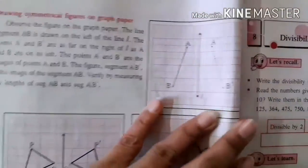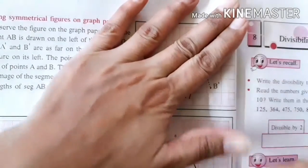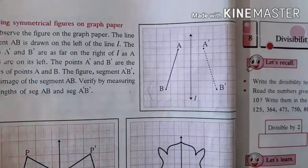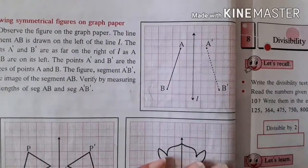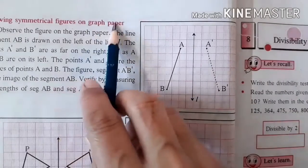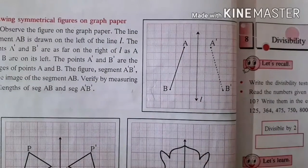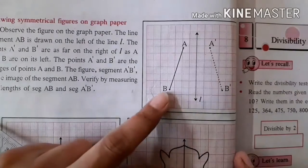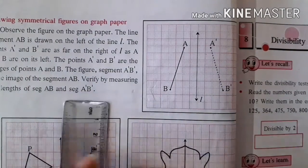Children, for this next part, pay attention — it is a little hard, but if you understand it, it will be very easy. I will try to explain it in a very easy method so the concept will be clear. We are now drawing symmetrical figures on a graph paper. Before this you were drawing figures on plain paper, but now you have to draw on graph paper.